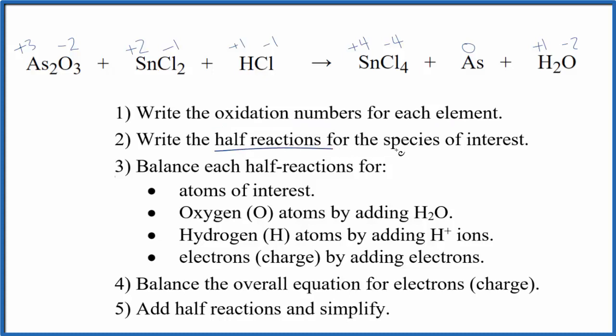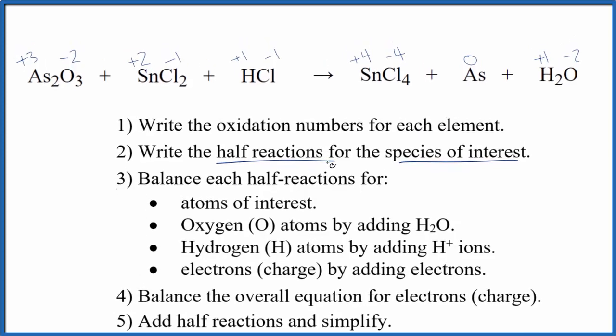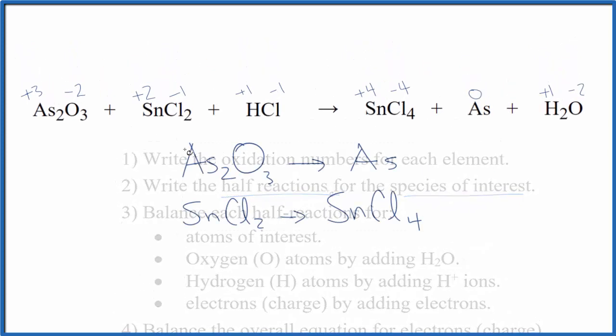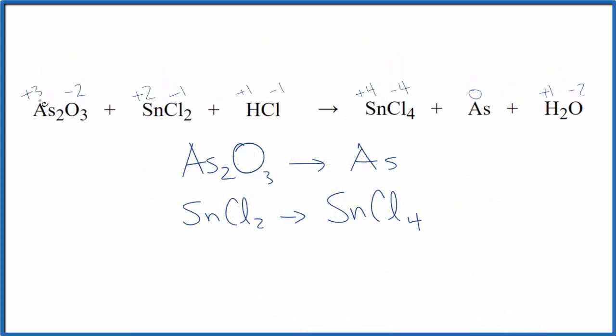Next, you write the half reactions for the species of interest. They're the ones whose oxidation states have changed. That looks like this. So the arsenic, we went from plus three on each arsenic to zero. So this number got smaller, so this was reduced. This is the reduction half reaction.